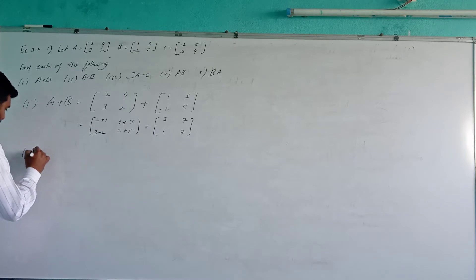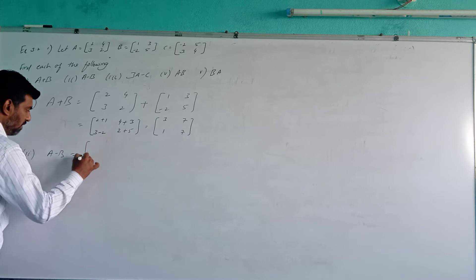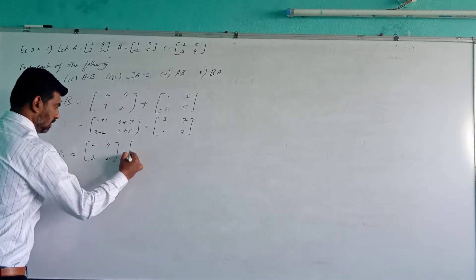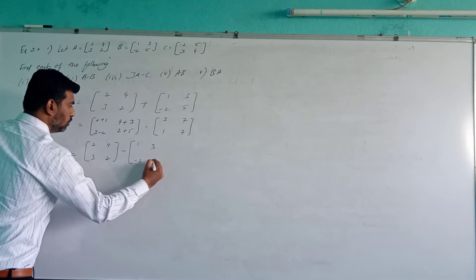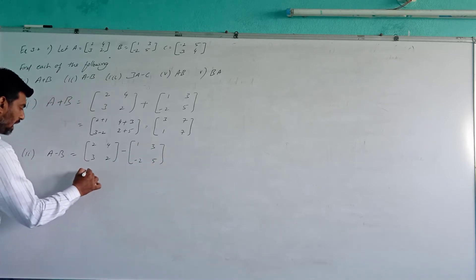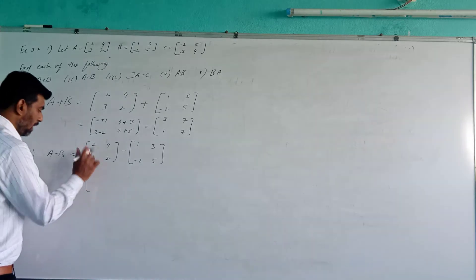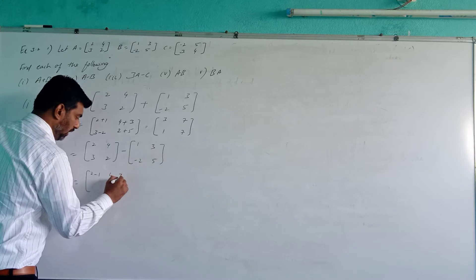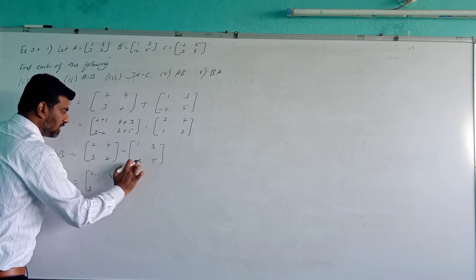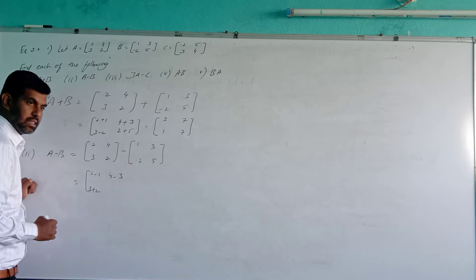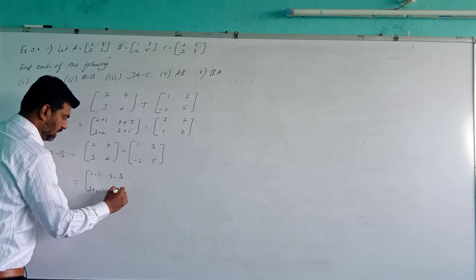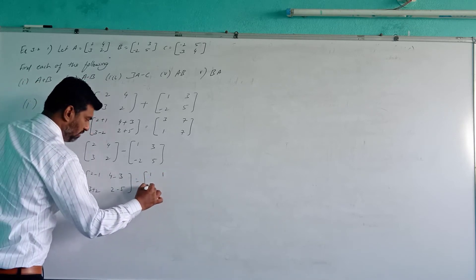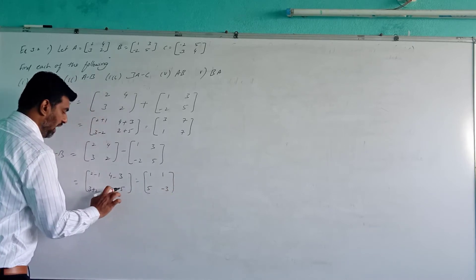Now the second answer: A minus B. Matrix A is [2, 4; 3, 2] minus matrix B which is [1, 3; -2, 5]. Orders are the same, so corresponding elements will be simplified. First row: 2 minus 1 = 1, 4 minus 3 = 1. Second row: 3 minus (−2) = 5 (minus into minus gives plus), 2 minus 5 = −3 (bigger number is 5, so sign is minus). Answer is [1, 1; 5, −3].